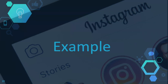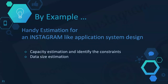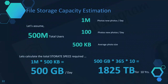Let's look at another example: Instagram. Instagram is all about photos and data — tagging and messages on any video or photo. A handy estimation for an Instagram-like application system design involves three steps: capacity estimation, identifying the constants, and data size estimation. For file storage capacity estimation: assume 500 million total users, 1 million new photos per day, and 500 KB average photo size.